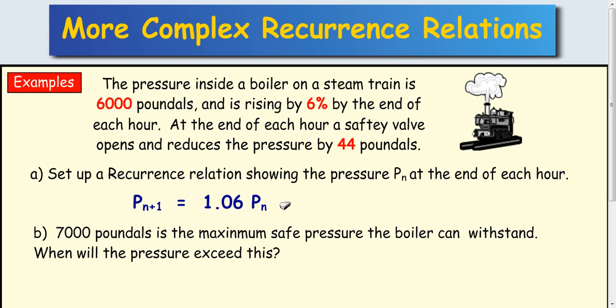Then we look to see if we're adding on or subtracting after this. At the end of each hour the safety valve opens and reduces the pressure by 44, so that's a takeaway. Our starting value is 6000 pounds, so P₀ equals 6000.